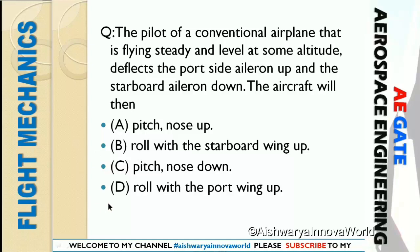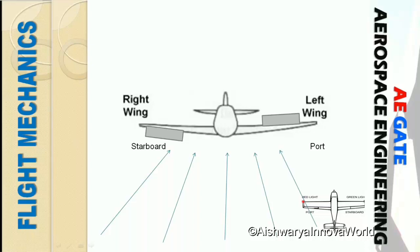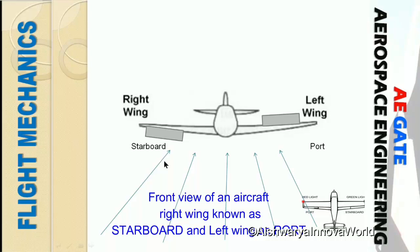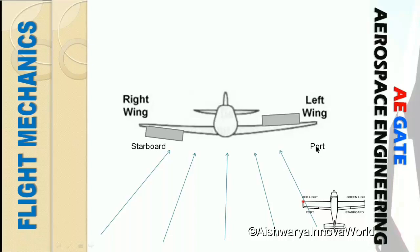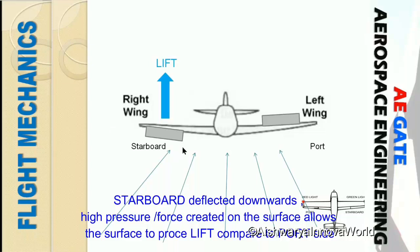You have to choose between options B and D. Let us see the figure displayed on your screen. This is an aircraft where the right wing is called starboard and the left wing is called port. The starboard aileron is deflected downwards as given in the question, so lift takes place from the starboard side.